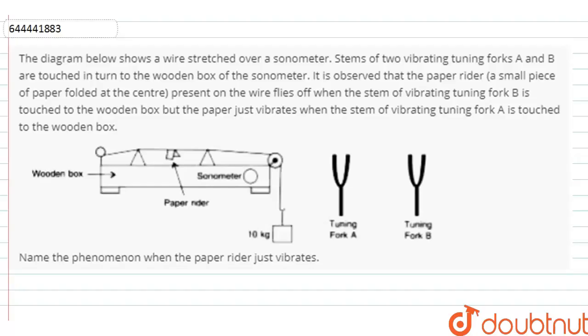The question is, in the diagram given below, a wire stretched over a sonometer, stems of two vibrating tuning forks A and B are touched in turn to the wooden box of the sonometer.